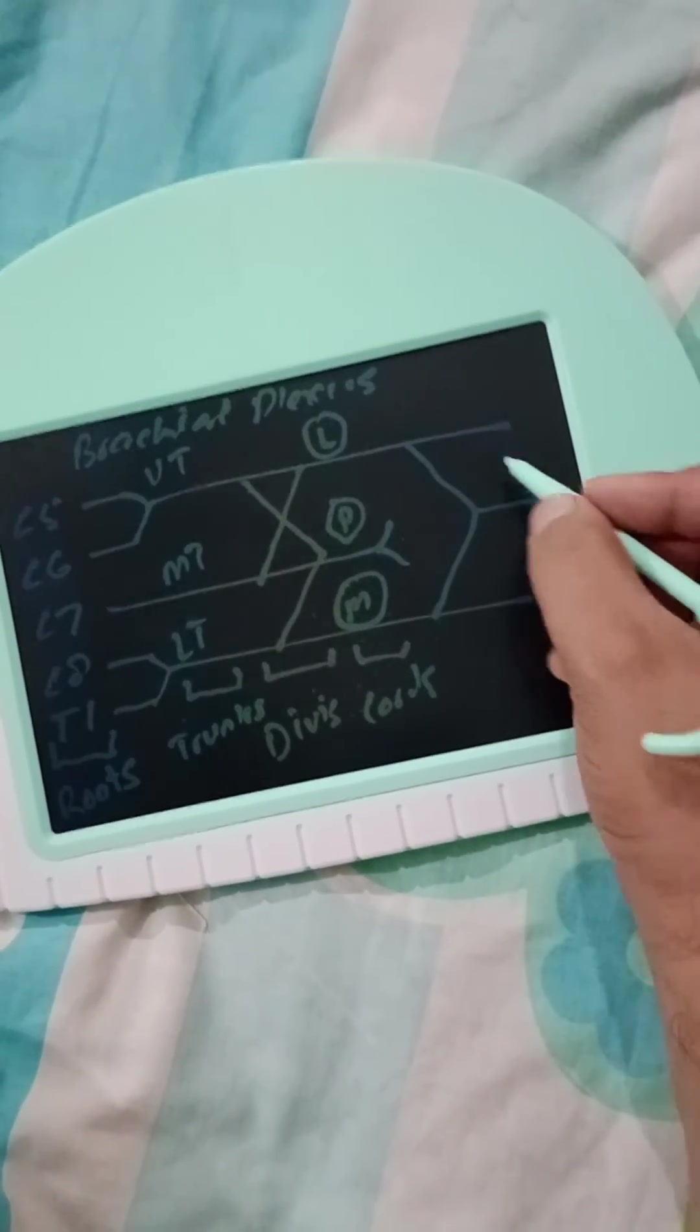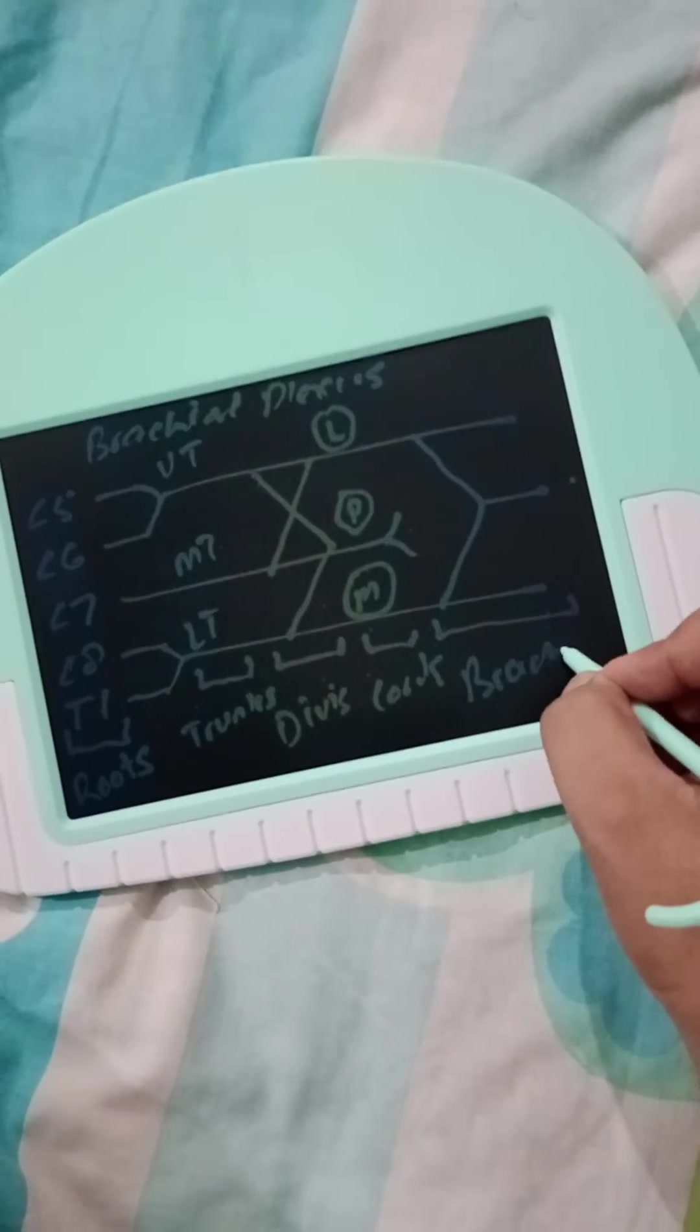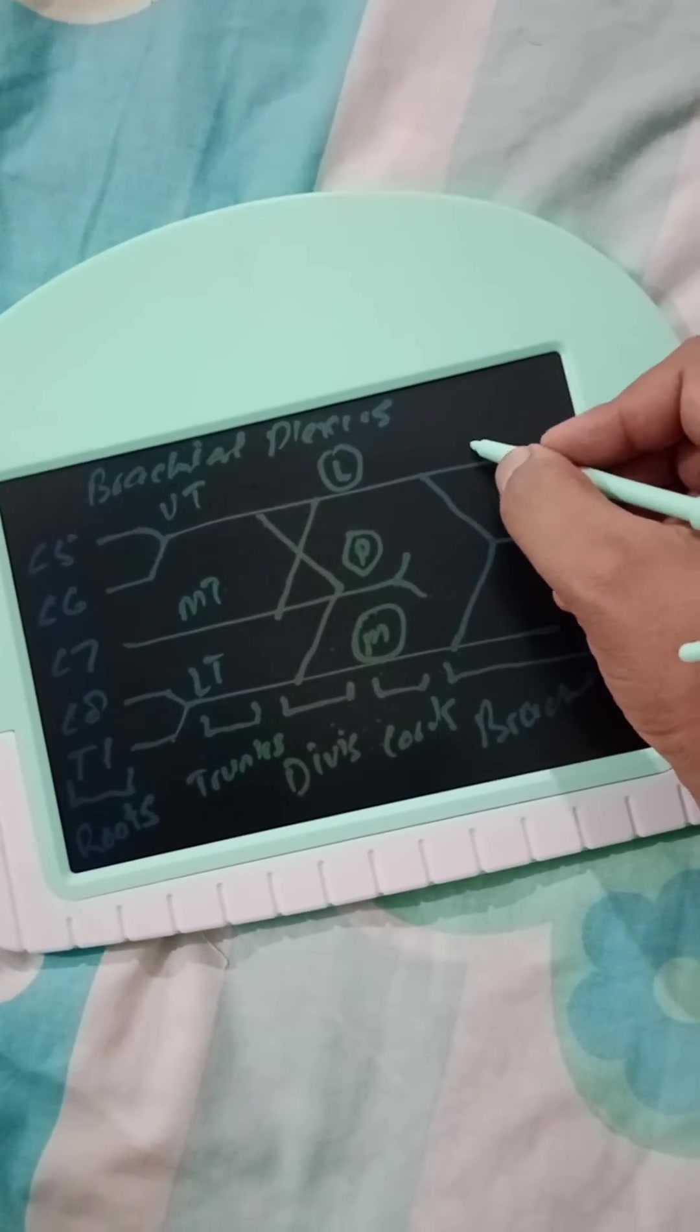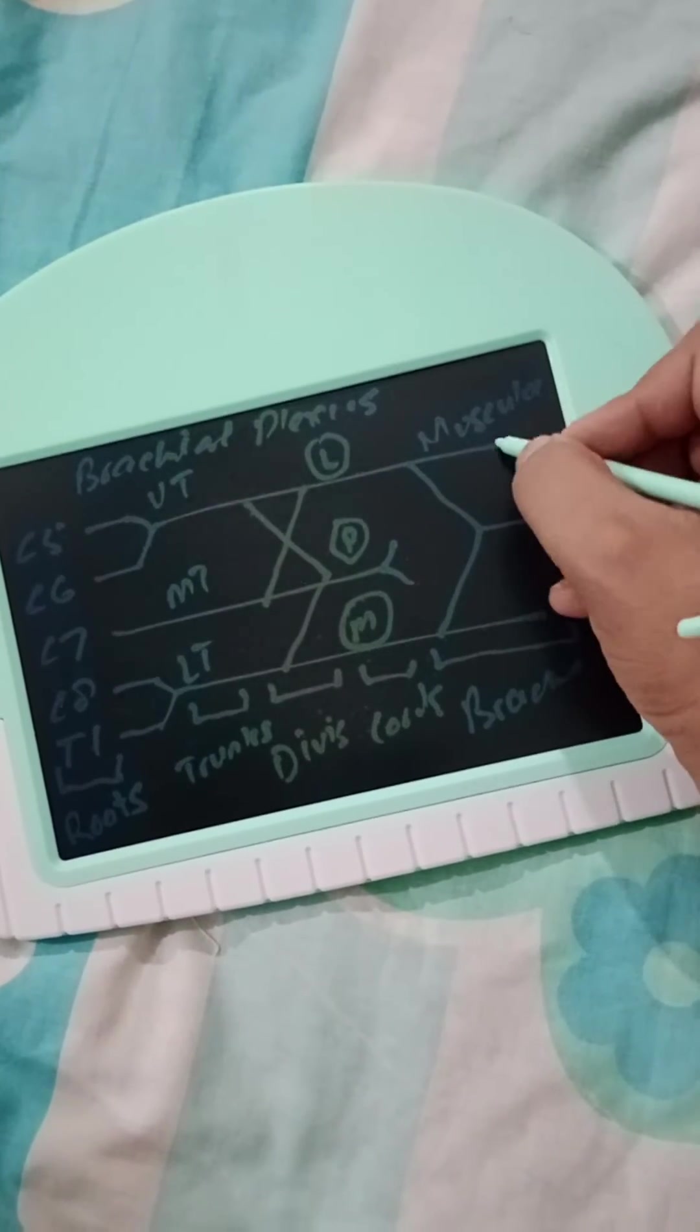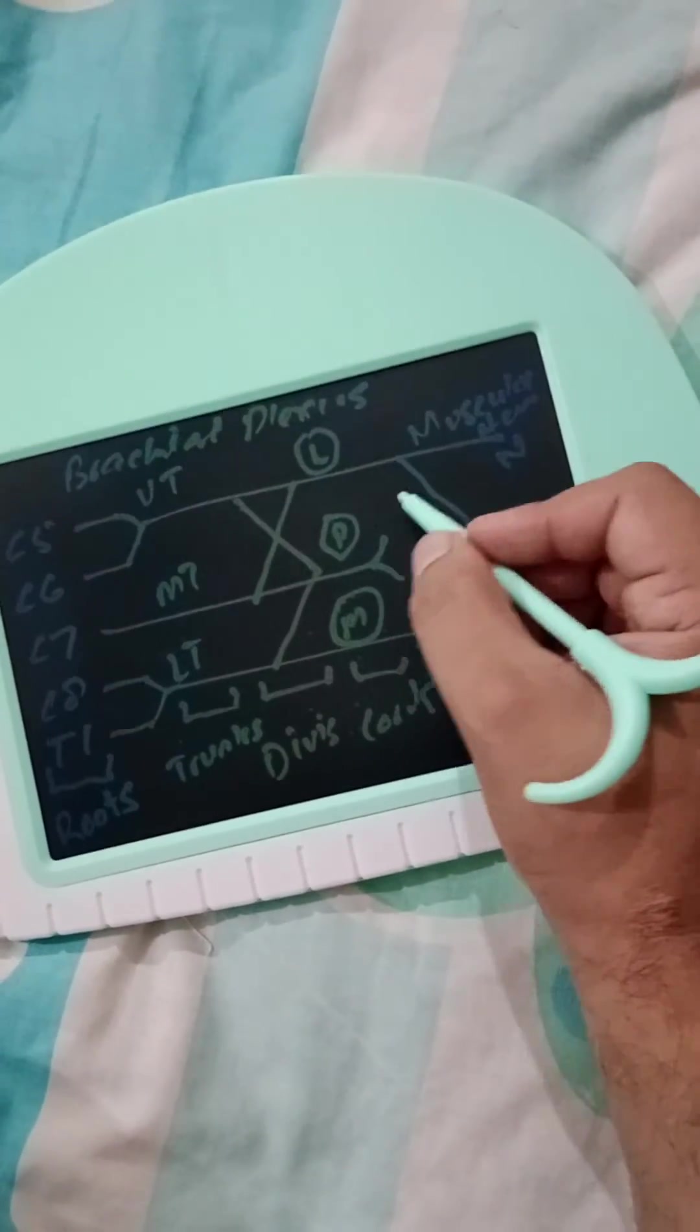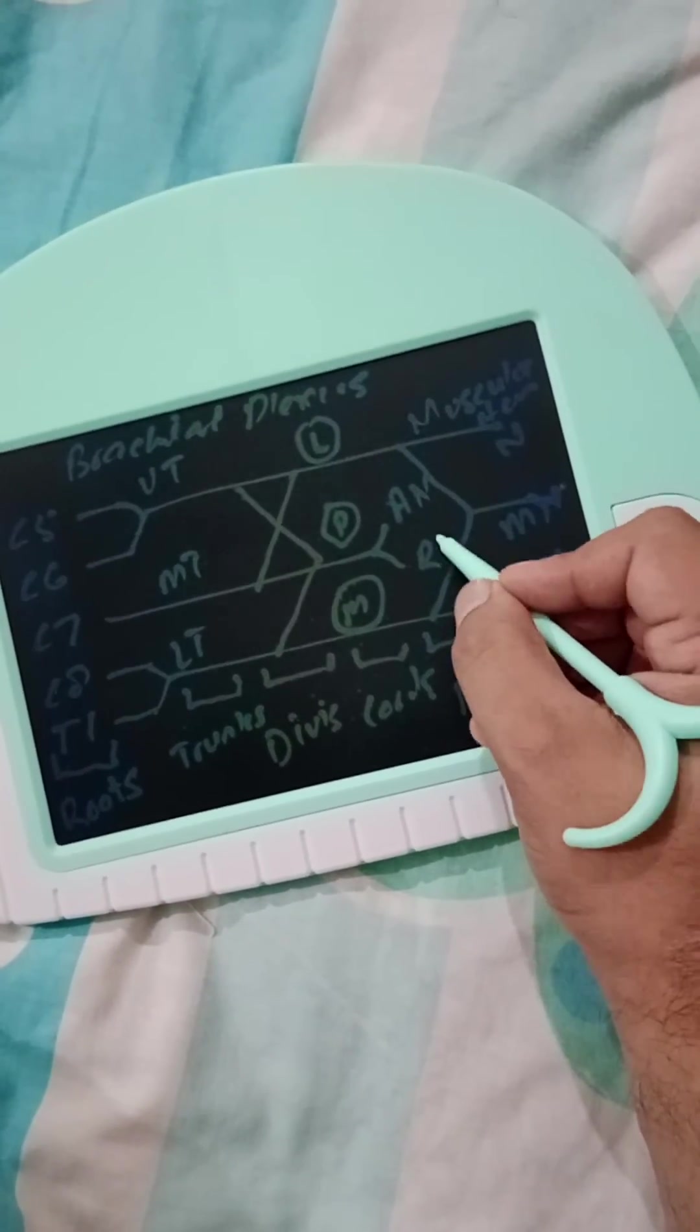And this one, two, three, four, and five are branches of brachial plexus. This is musculocutaneous nerve, this is median nerve, this is ulnar nerve, this one is axillary nerve, and this one is radial nerve.